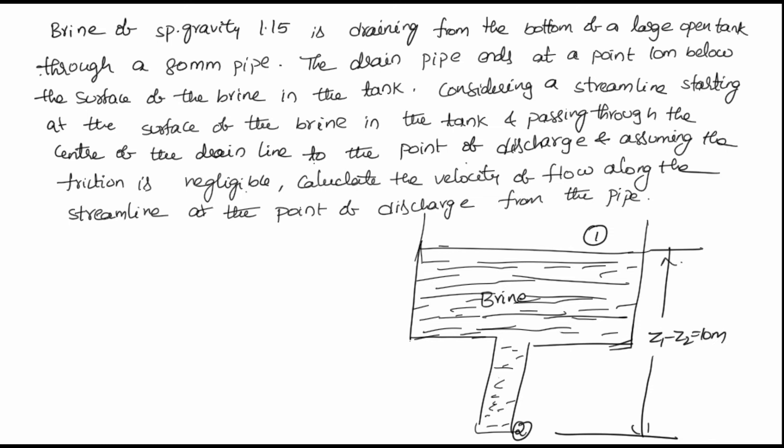We need to find the velocity at section 2. This problem is mainly about applying Bernoulli's equation at sections 1 and 2. According to Bernoulli's equation, the total energy at any section of the flowing fluid will be the same. We know the values at section 1, so by applying Bernoulli's equation we can solve for section 2.